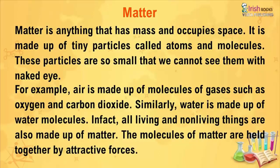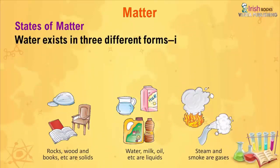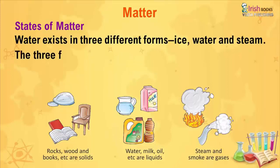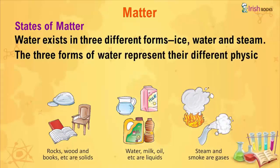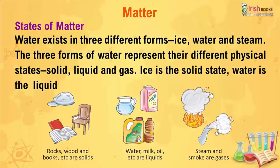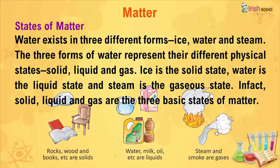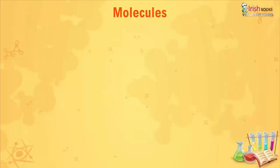In fact, all living and non-living things are also made up of matter. The molecules of matter are held together by attractive forces. Water exists in three different forms: ice, water, and steam. These represent the three different physical states — solid, liquid, and gas. Ice is the solid state, water is the liquid state, and steam is the gaseous state. Solid, liquid, and gas are the three basic states of matter.